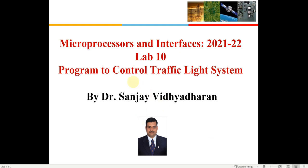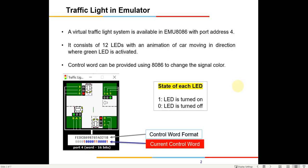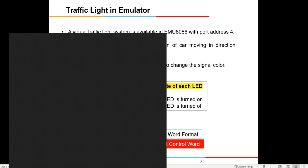Today I'm going to give you a brief about how to write a program to control a traffic light system in the emulator. On port address number four there is already an inbuilt traffic light system. If you see the lights, they are already numbered — the first one is a red light, then 0, 1, 2. Yellow is 1 and green is 2.